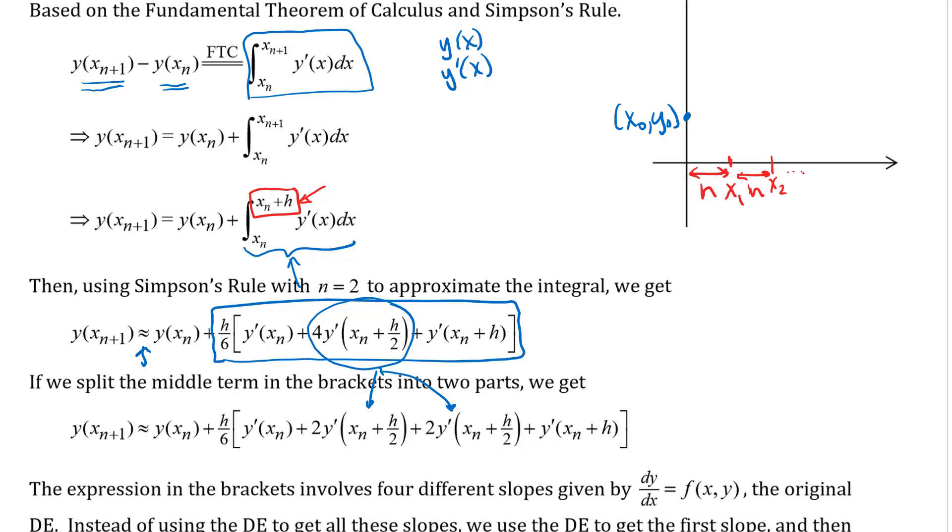Okay so if we focus a little bit on what's happening in the brackets here. These are y prime. Remember that we are working with a differential equation dy/dx equals some function of x and y. And so these are all y prime or dy/dx values. Those are all slopes at different points. We can use the differential equation to get four different slopes but we're actually going to do something similar to what we did with improved Euler method which is use some different values at different points to get different slopes. So I'm just going to talk through this a little bit with the graph and then I'll scroll up here and we'll look at the formulas.